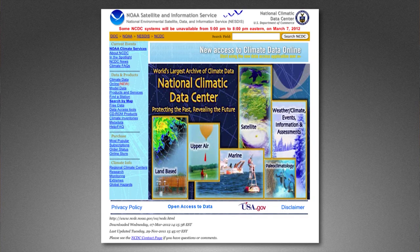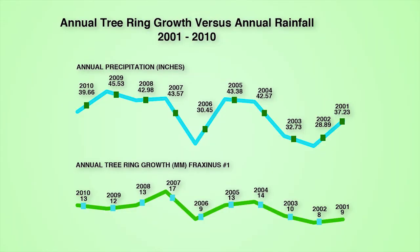We've had a chance to sample the tree rings, look at them under the microscope, and measure the width of the rings from year to year. What we can do with that data is correlate it to annual precipitation — records of annual precipitation for different regions in the United States are freely accessible via the NCDC website. What you're looking at here is an Excel spreadsheet with data from a green ash or Fraxinus tree here on campus, showing a correlation between annual growth from year to year and precipitation received here in eastern Kansas.